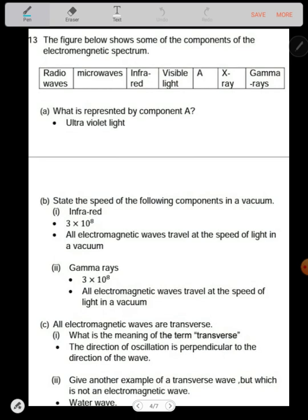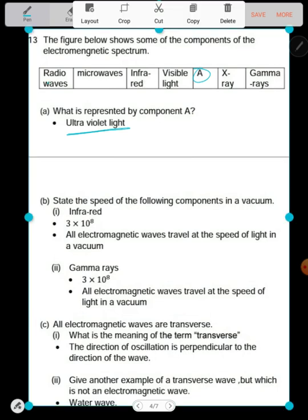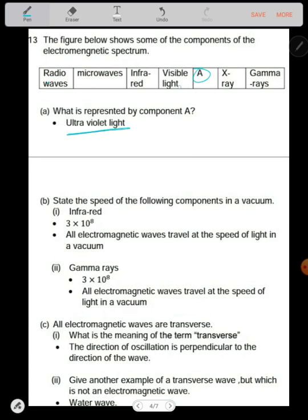The figure below shows some of the components of the electromagnetic spectrum. We have gamma rays, microwaves, you have infrared, you have visible, we have A here, we have x-ray, we have also gamma rays. What is represented by the component A? So A is an ultraviolet light. So it's radio, microwaves, infrared, visible light, then ultraviolet light, then x-ray, then you have gamma rays.